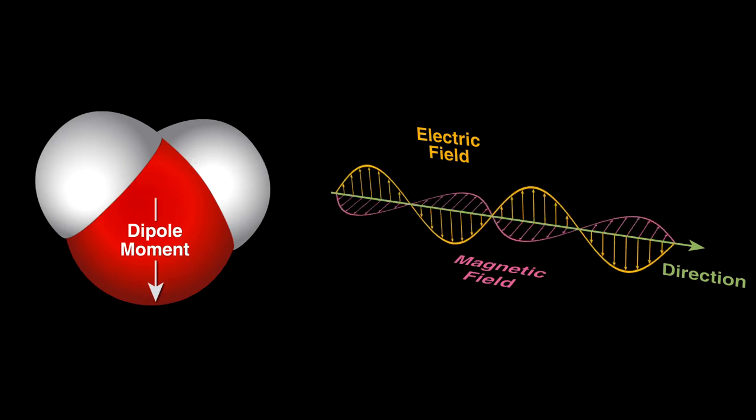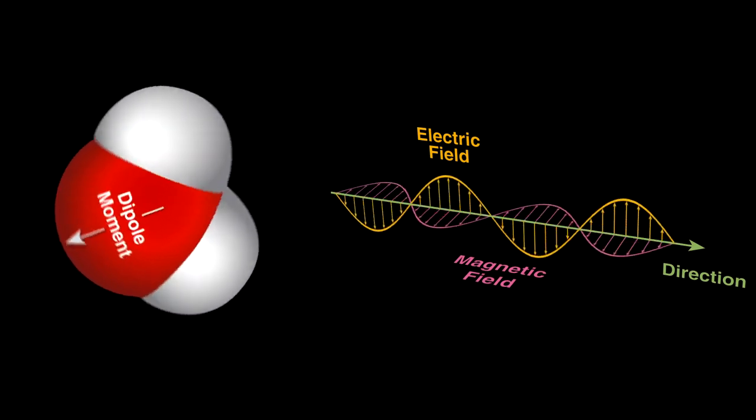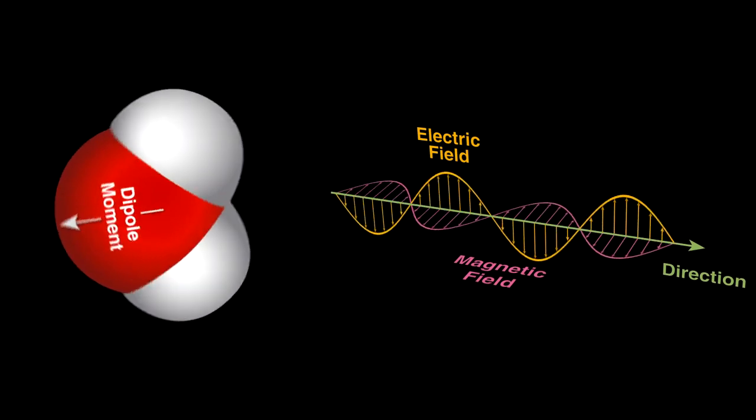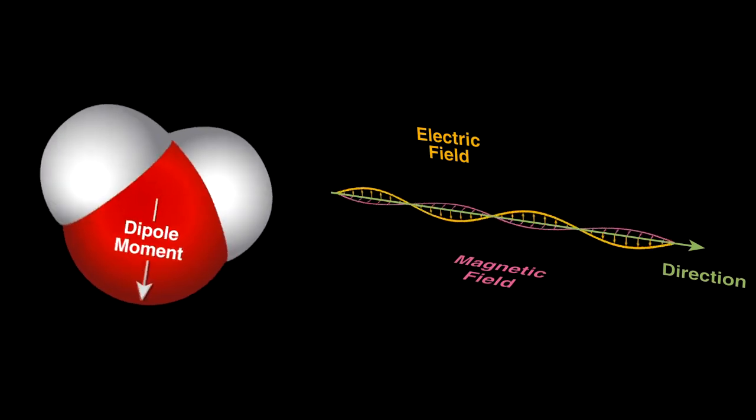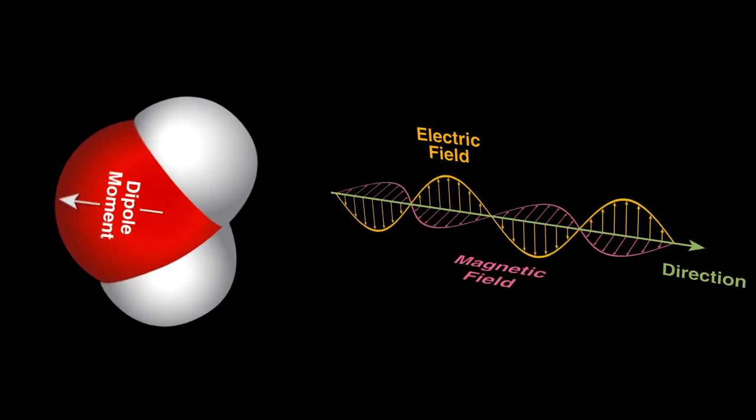The changing field rocks the water molecules back and forth rapidly, and molecular friction from this creates heat as the motion disrupts the hydrogen bonds between neighboring water molecules.